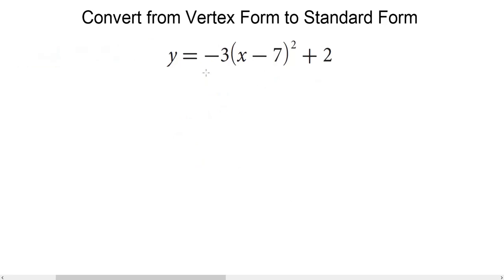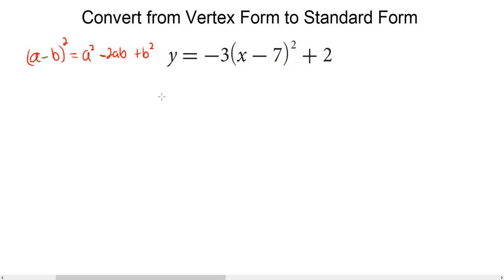Let's take a look at another example: y equals negative 3 times (x minus 7) squared plus 2. We need to take care of x minus 7 squared. This is a special product — an (a minus b) squared. The pattern is the same, except the middle term is negative: first term squared in the front, second term squared in the back, and negative 2ab in the middle. So x minus 7 squared gives us x squared in the front, 49 in the back, and negative 7 times x doubled gives negative 14x in the middle.